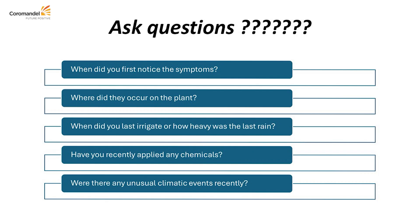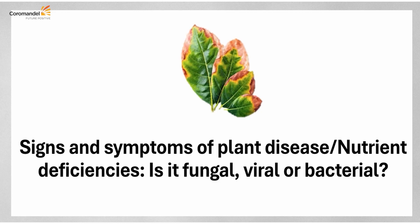We need to determine whether the symptom is in the lower or top part of the plant, whether the soil is heavy or light, whether rainfall is heavy or drought conditions exist, whether any chemical was applied, and whether adverse agro-climatic conditions are present. All these factors must be assessed before concluding whether the yellowing or stunted growth is due to nutrition or disease-based infestation.